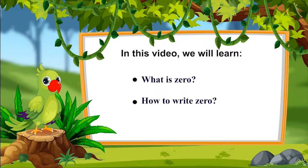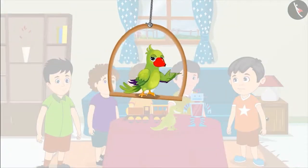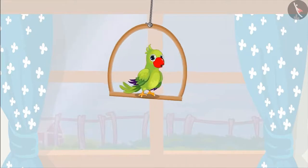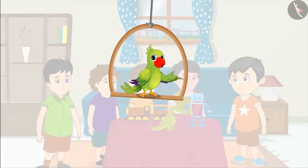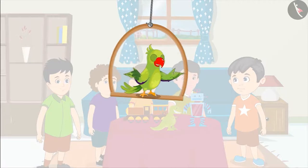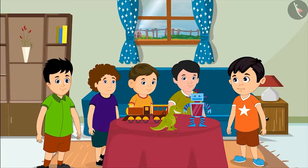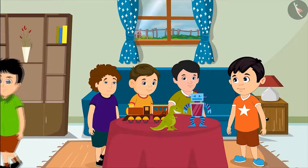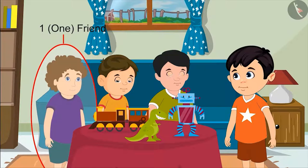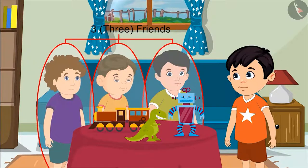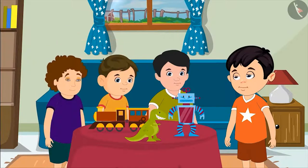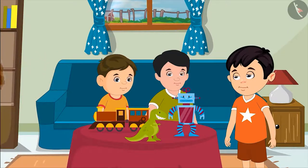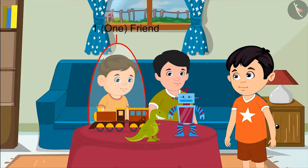Today, four of Shotu's friends have come to play at his house. Now it is getting dark, so his friends are leaving one by one. First there were four friends, then one went home. Now there are one, two, and three friends left. Then another went to his house, now there are one and two friends left.